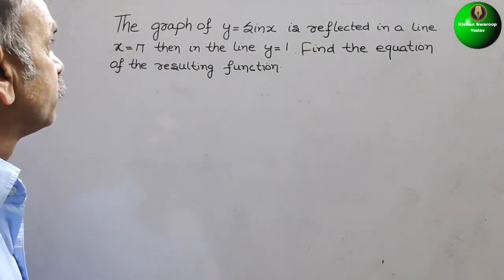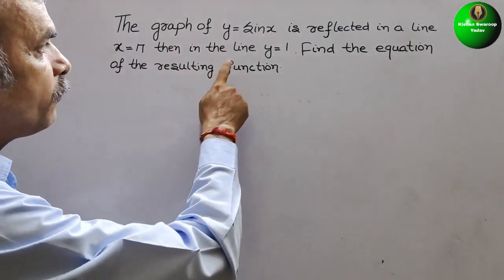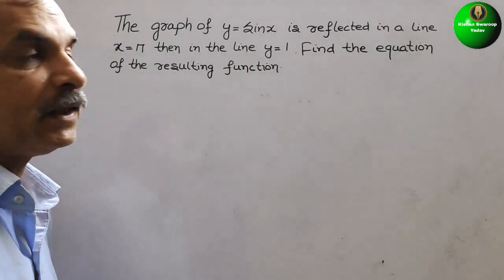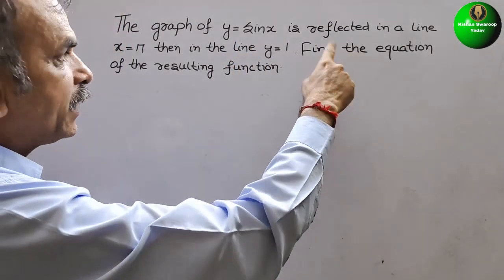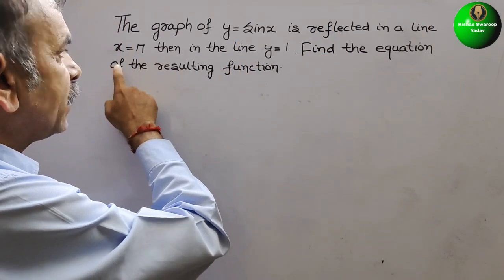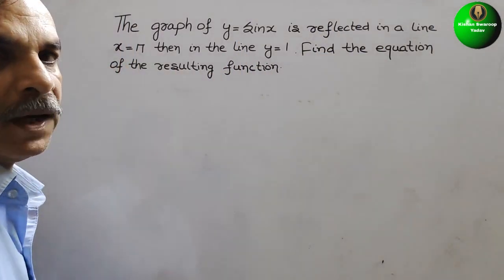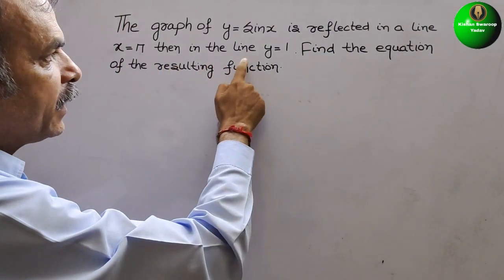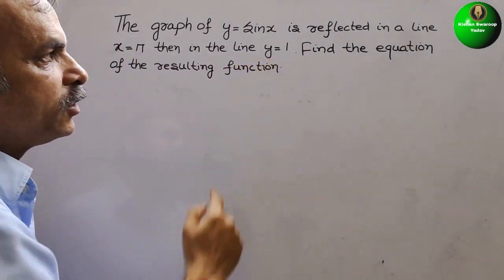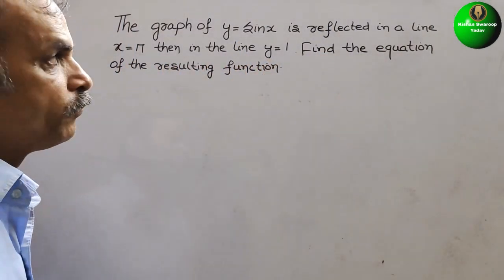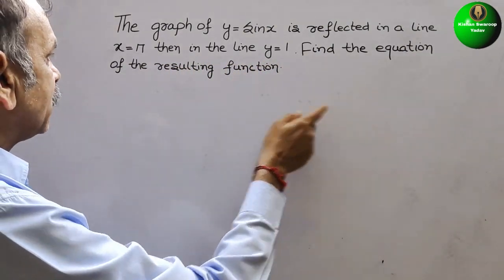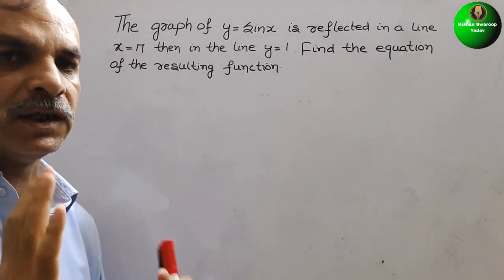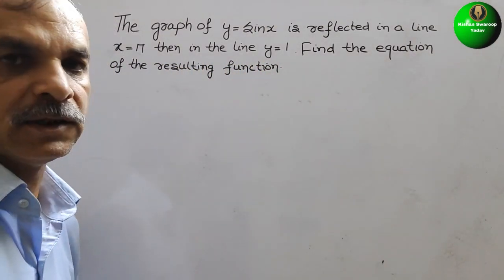Your question is: the graph of y equals sin x is reflected in the line x equals pi, then in the line y equals 1. Find the equation of the resulting function.